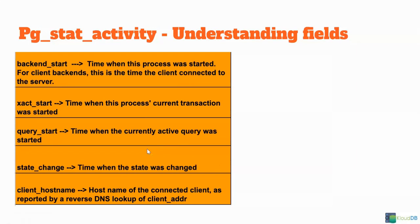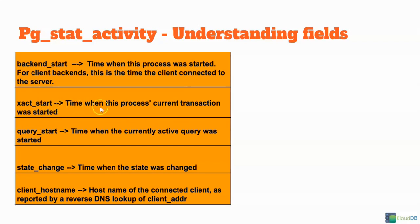More important columns. The backend start is the time when the process was started for the client's backend — the time when the client connected to the server. A connection can run several queries, but this is the actual backend start time, or the client connection start time. And then xact_start is the time when this process's current transaction was started. If you want to know when the current transaction started, you can use the xact_start column.